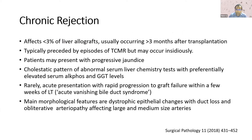Chronic rejection is actually quite rare, affecting less than 3% of allografts, and usually occurs more than 3 months after transplantation. Typically it is preceded by unresponsive T-cell mediated rejection, but it can occur many years after transplant insidiously. Patients usually present with progressive jaundice and a cholestatic pattern of abnormal serum chemistries.